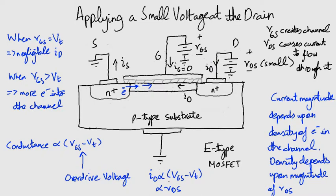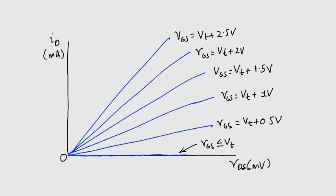Moving forward, take a look at this graph. This shows what happens when we increase VGS, while keeping VDS small and constant. The relationship is linear.